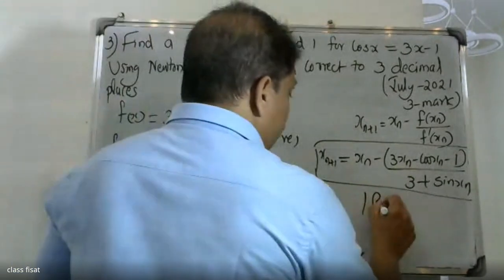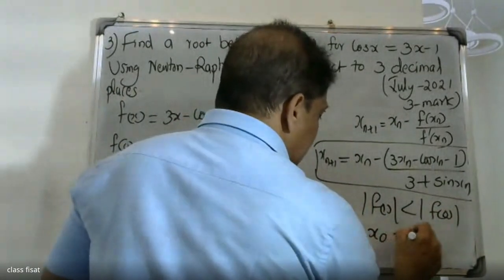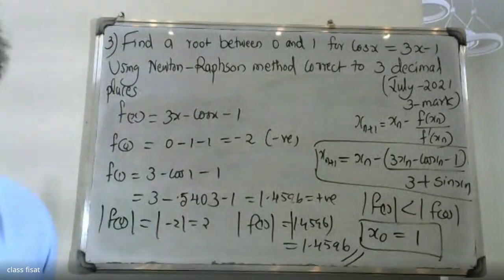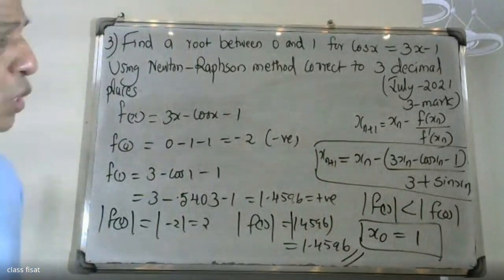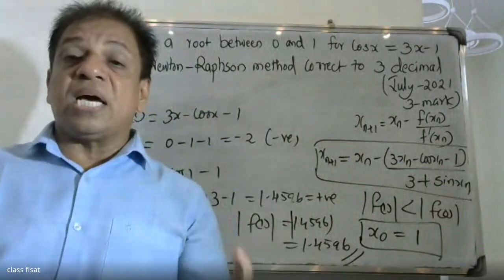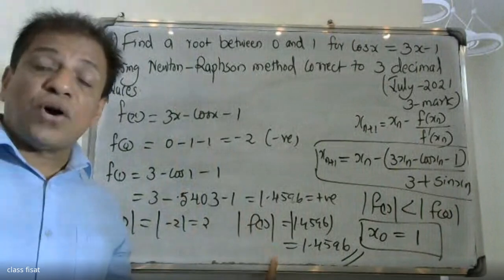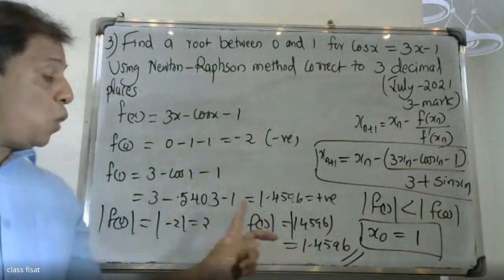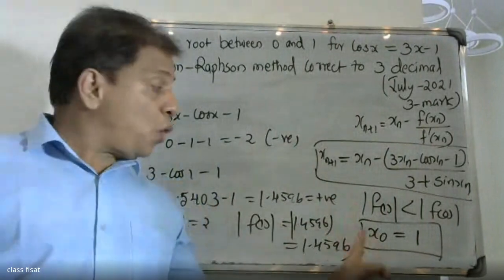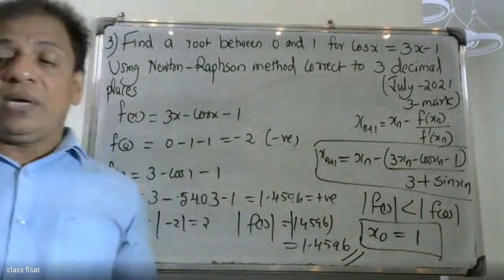Since the modulus of f(1) equals 1.4596 and the modulus of f(0) equals 1, and modulus of f(1) is less than modulus of f(0) — wait, actually since the root lies between 0 and 1, and checking sign change, we take x0 is equal to 1.